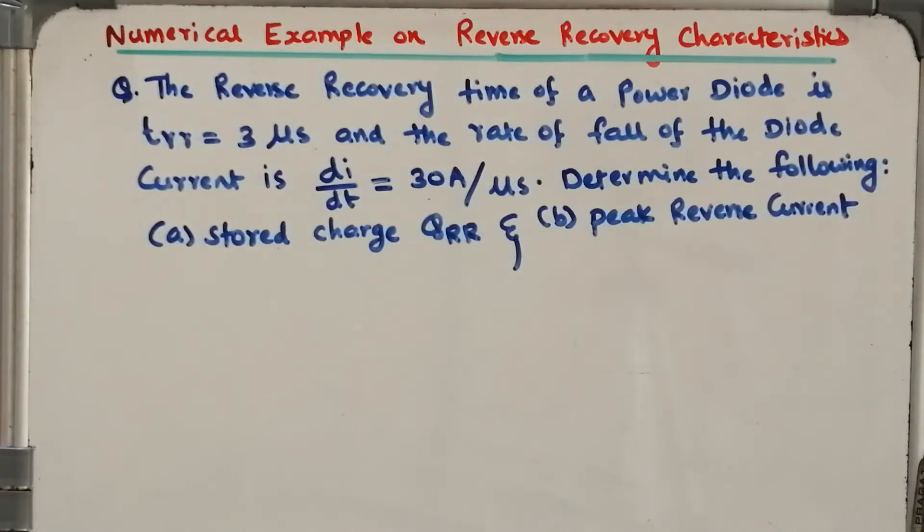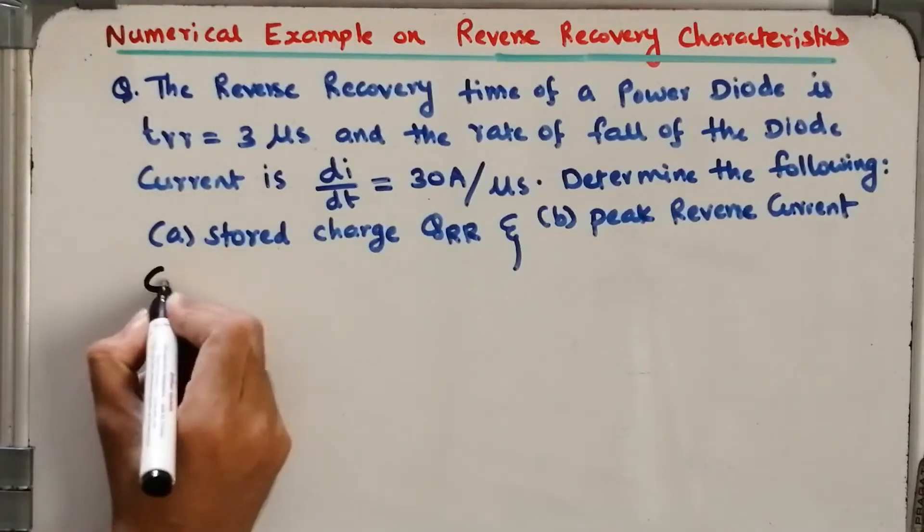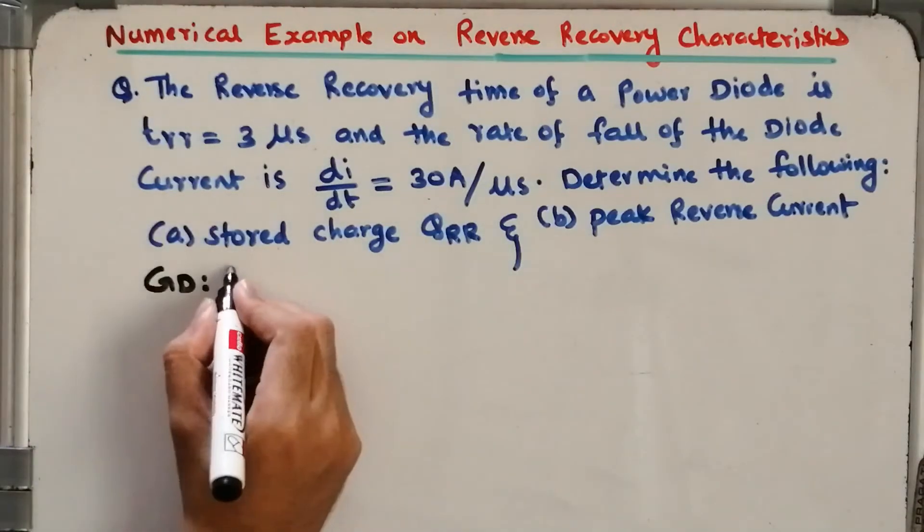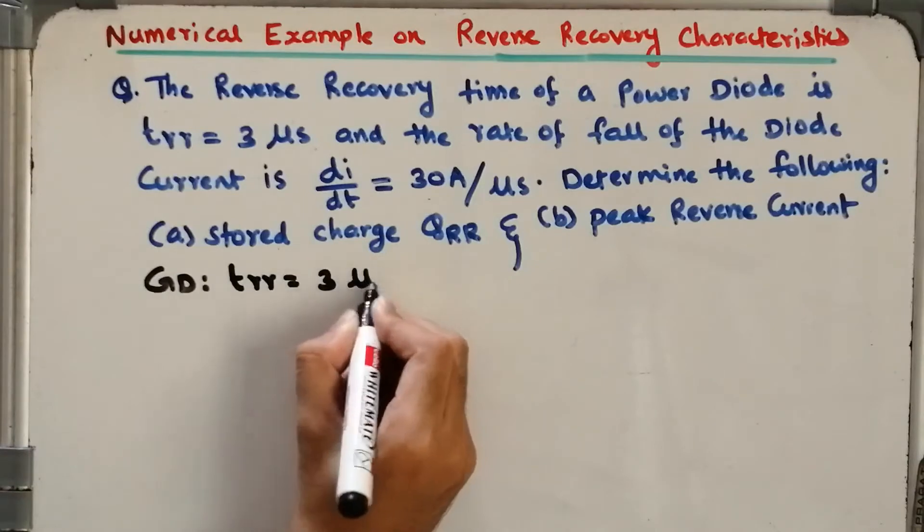Now let us find out the given data. So given data: we have TRR is equal to 3 microseconds. Let me convert into SI units, so TRR equals 3 times 10 to the power minus 6 seconds.